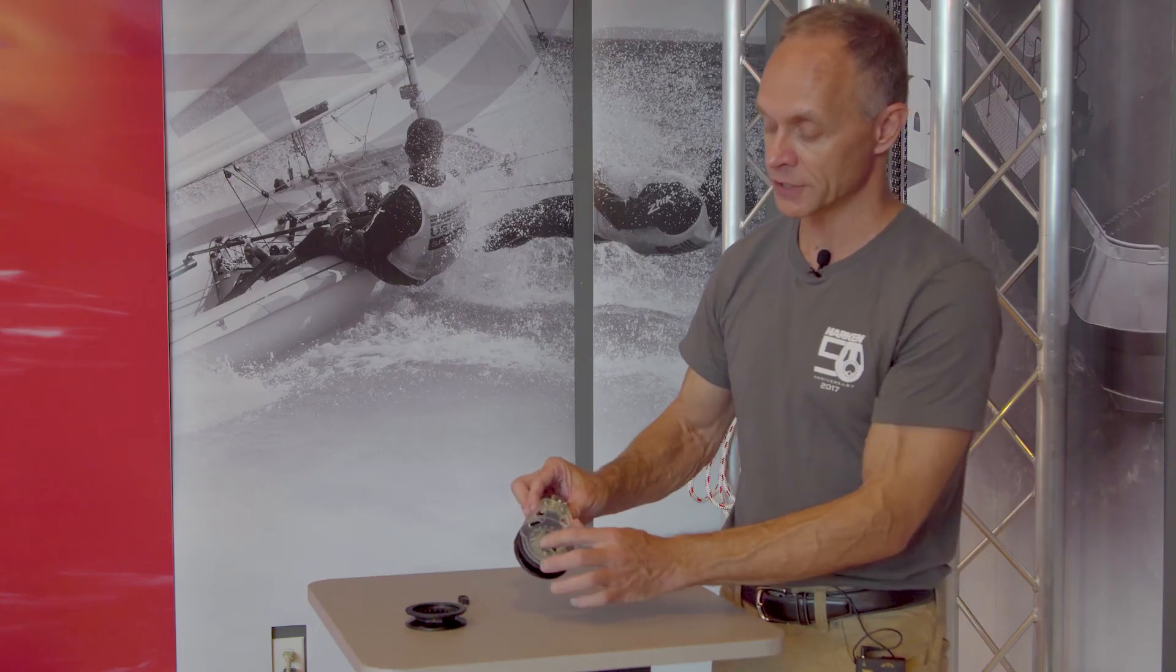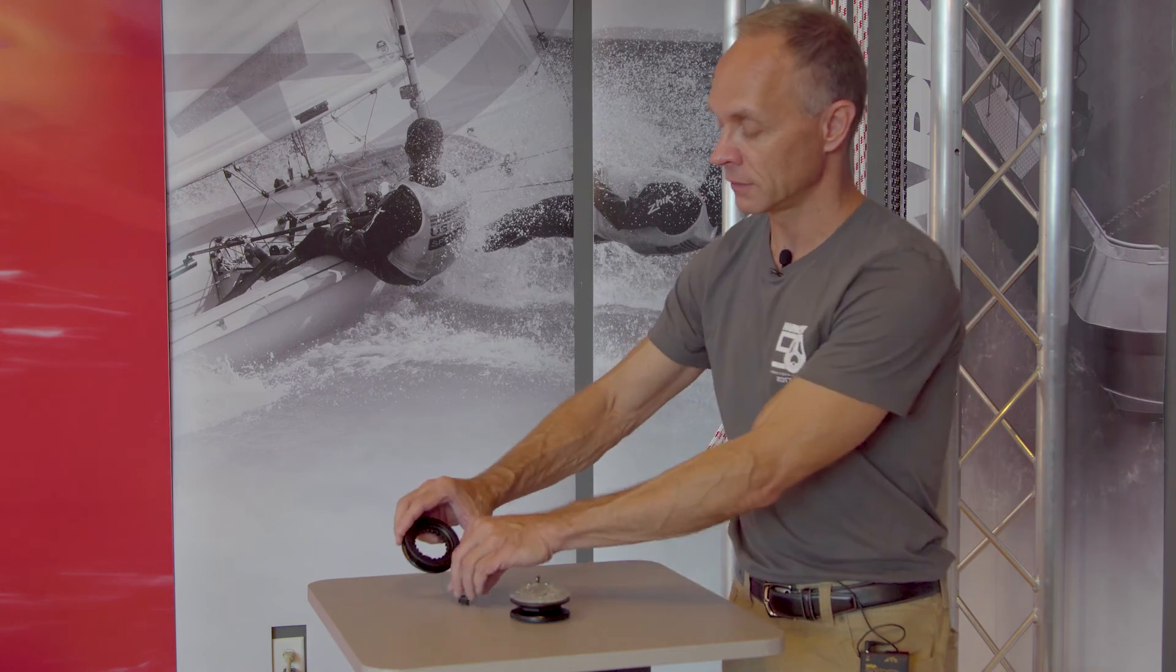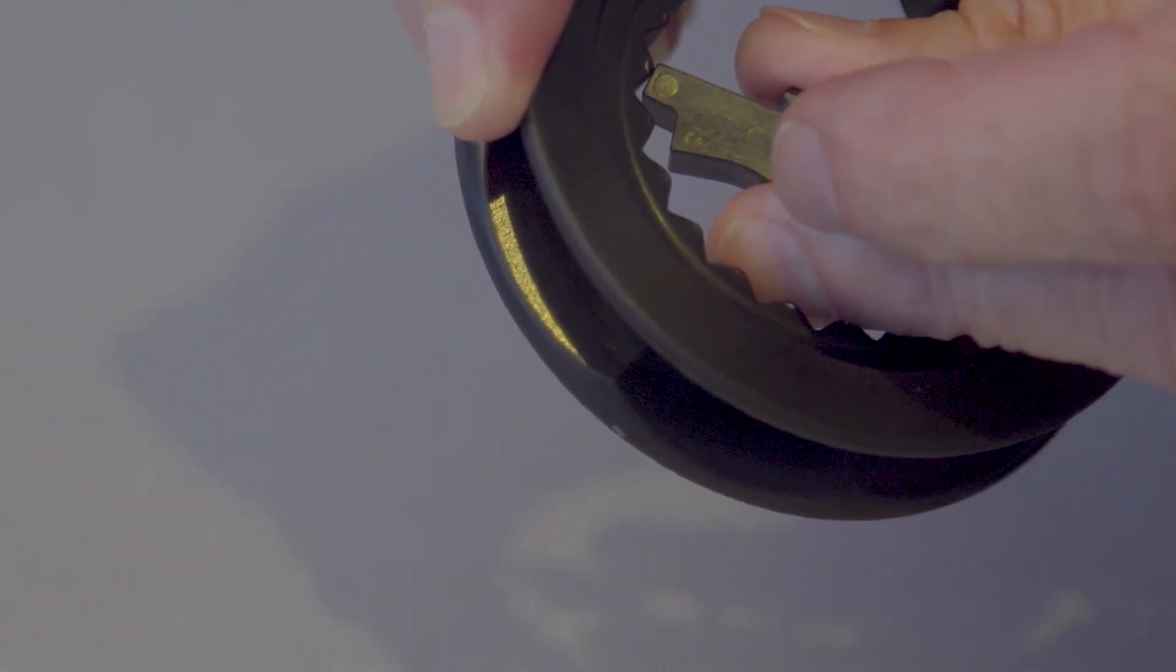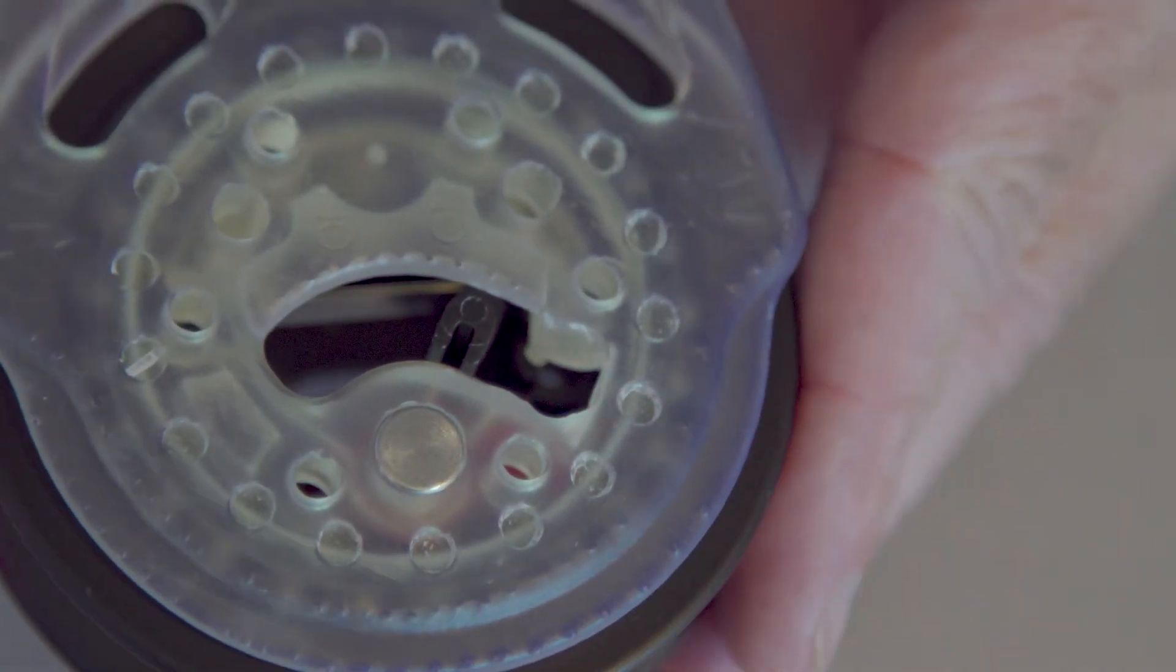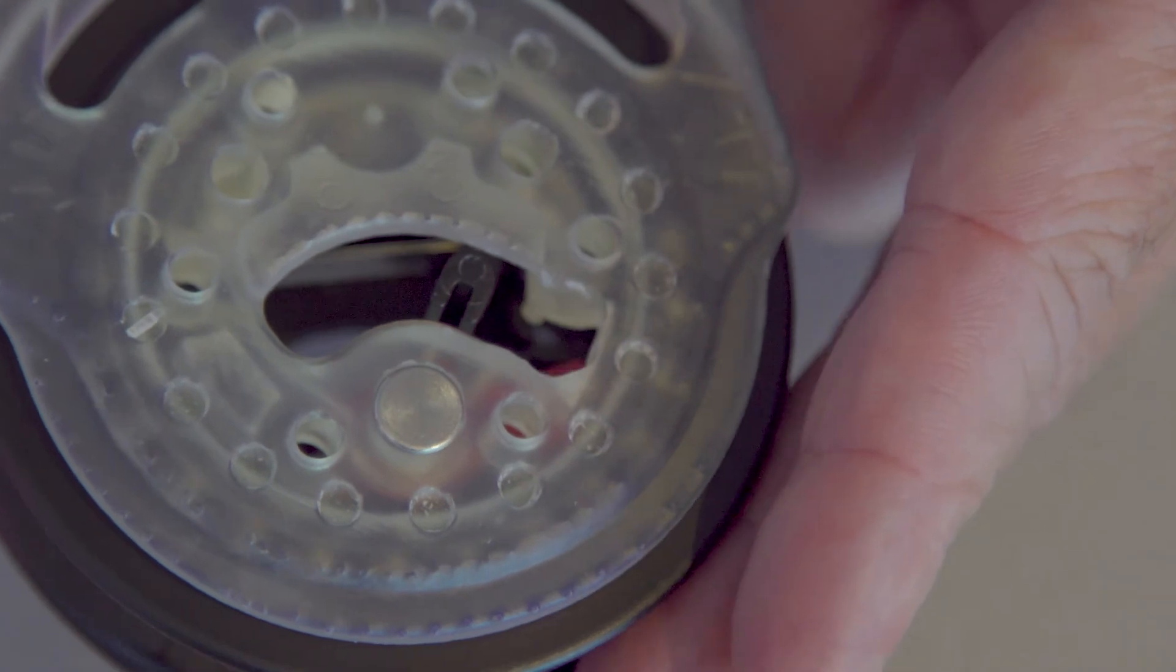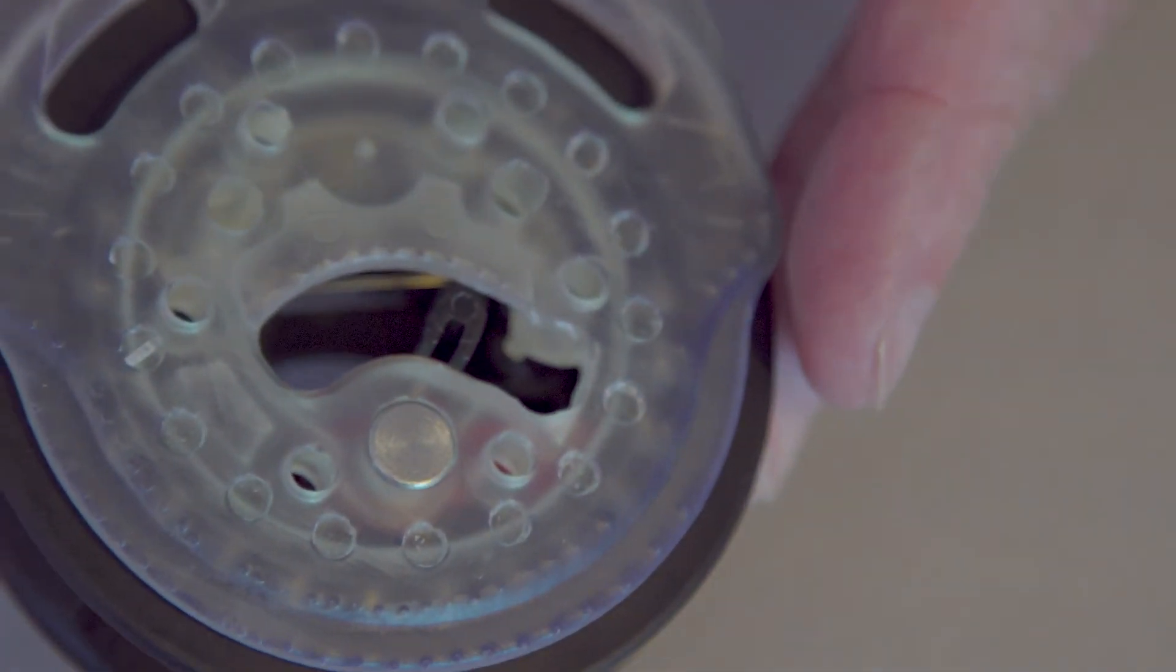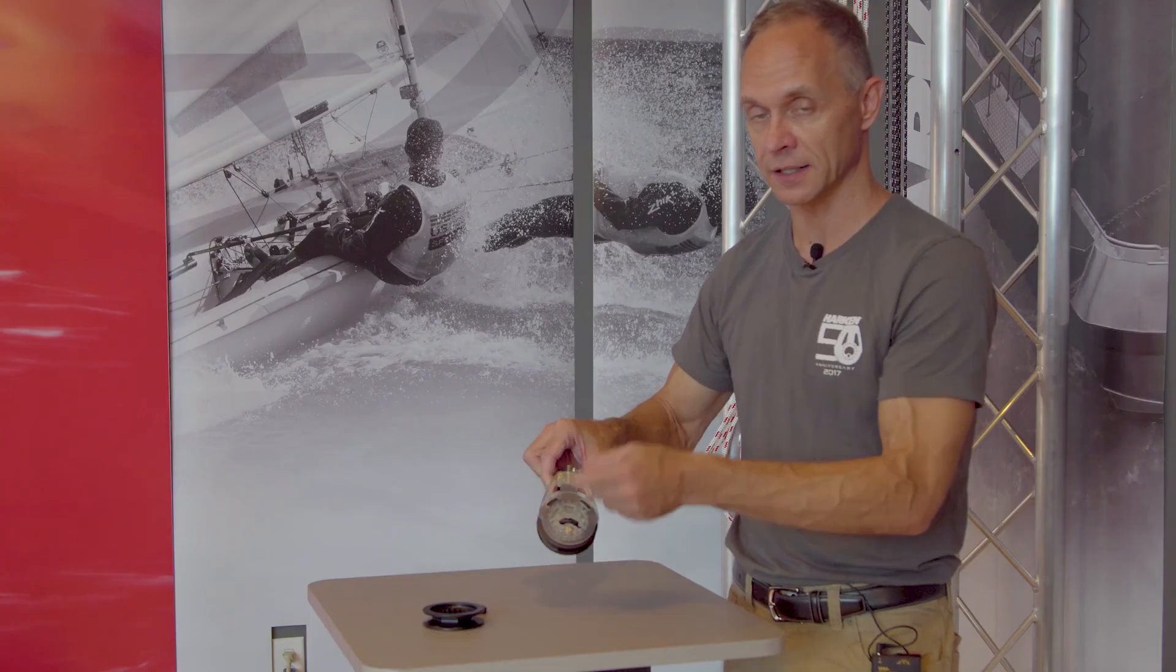But when the ratchet is turned on, the pawl engages with those teeth and stops it in one direction. It's allowed to pop up and over them in one direction, spring-loaded, but in the other direction, it jams hard against the shiv and stops it and that's what drags the line around it.